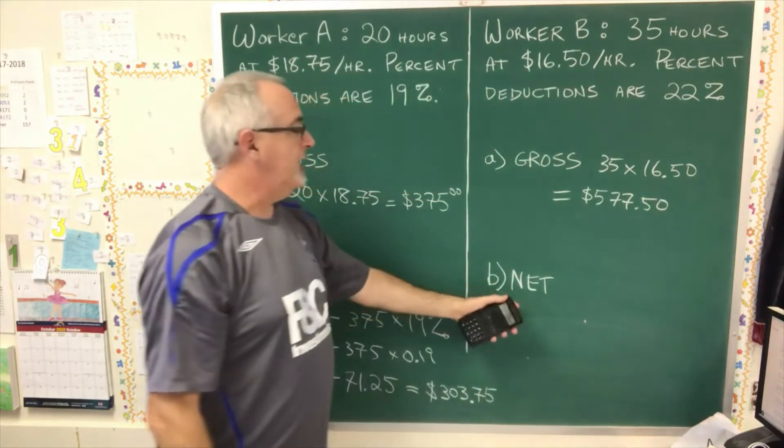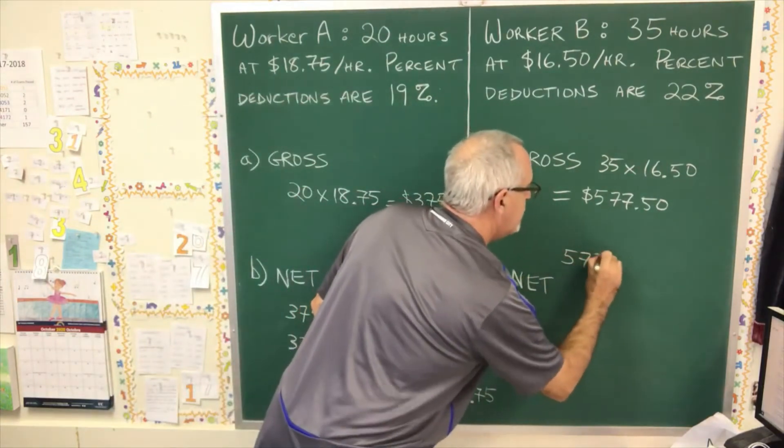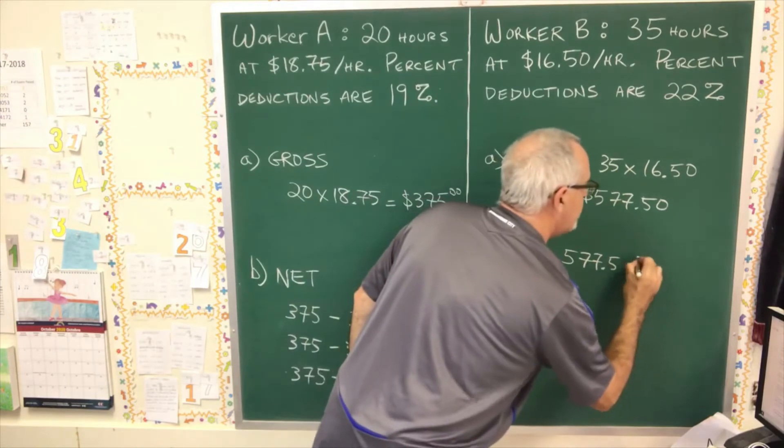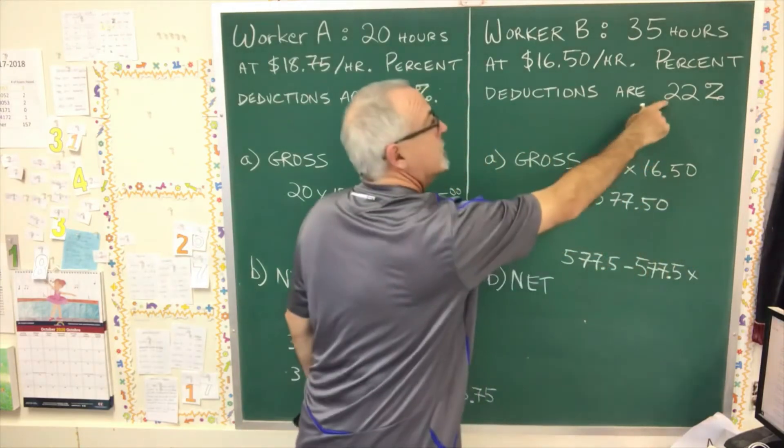Now, to calculate the net pay, I take $577.50 and I subtract $577.50 times 22%.